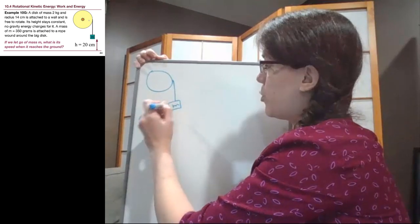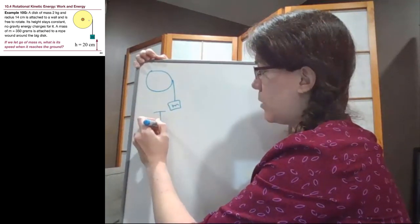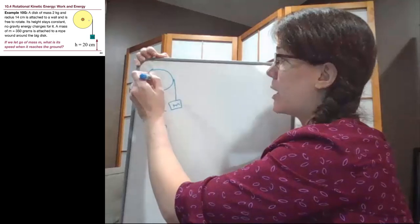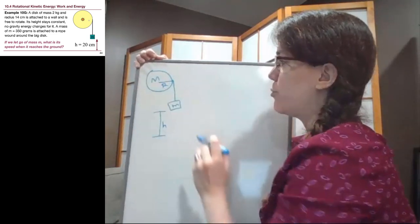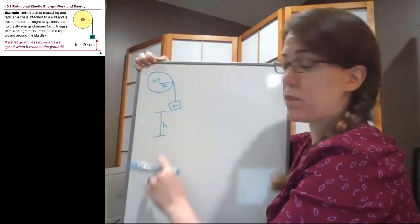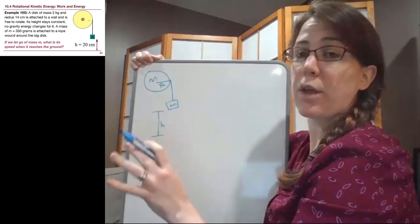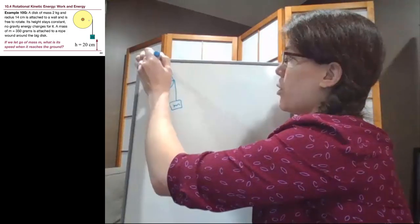So in the before picture, we are a certain height above the ground and nothing is currently moving. We have the mass of both objects, we have the radius of the disk, we have the height above the ground, and nothing is currently moving. This is our before picture.